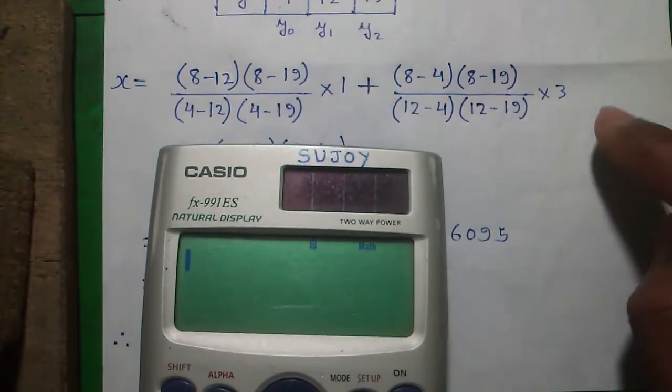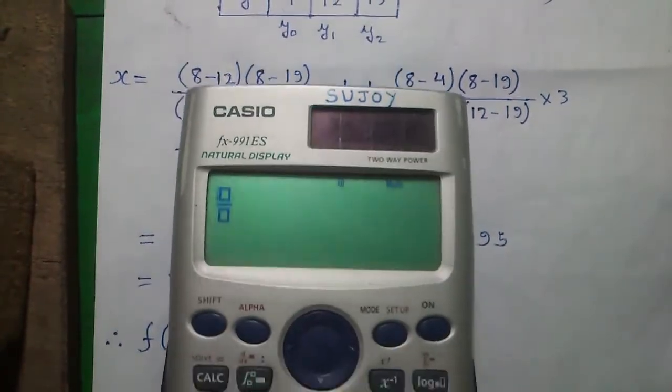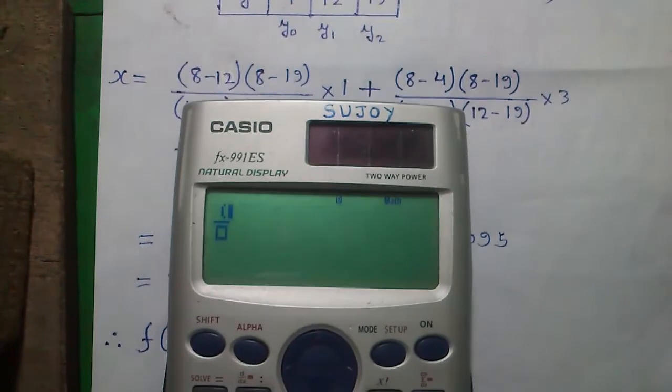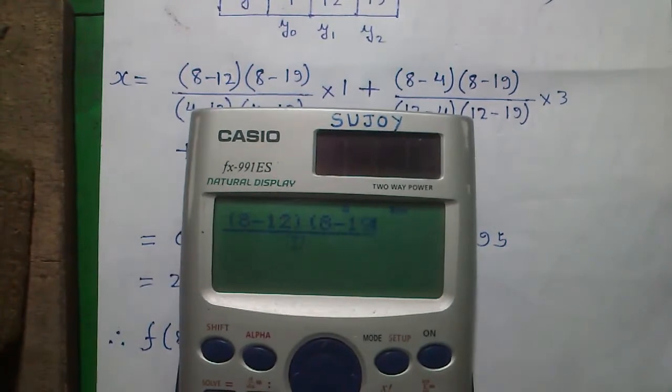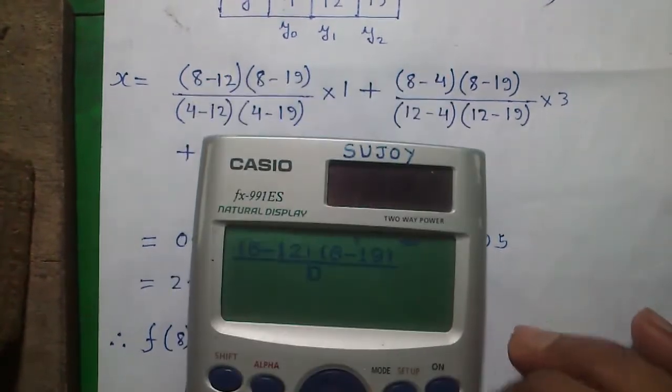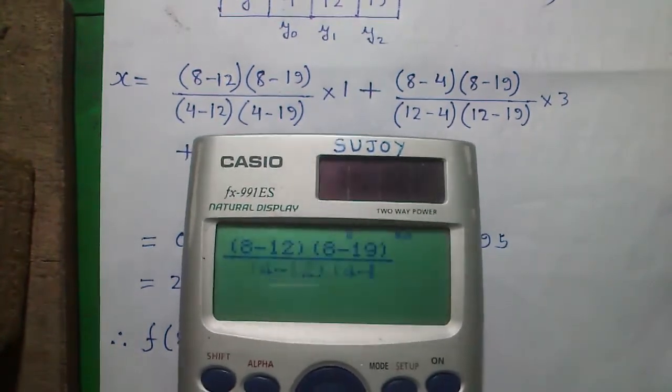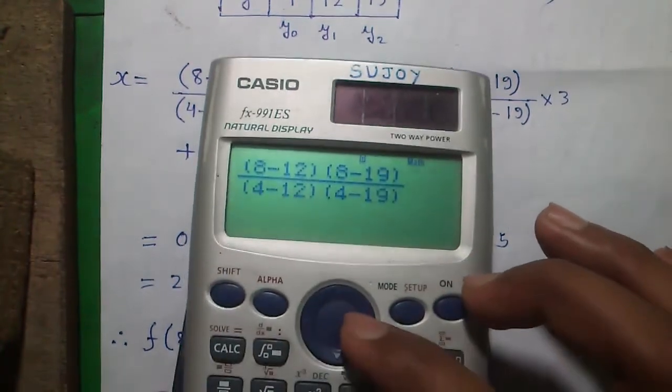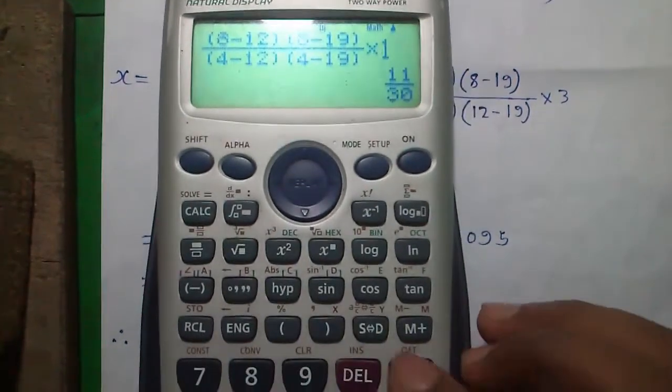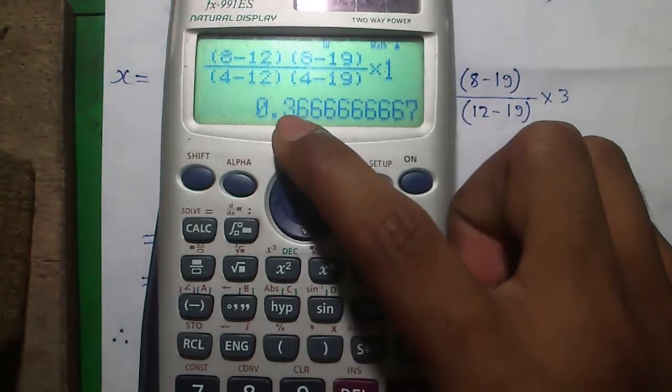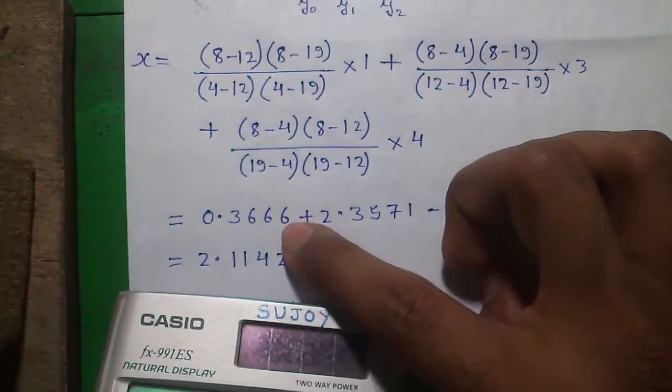And now we will show you how to perform the calculations on your calculator. So for that, press the fraction button, press the first bracket, 8 minus 12 into 8 minus 19. Press the joystick right to get down. And press equals to, and press S to D button to get the fraction form. That is 0.3666 and so on.